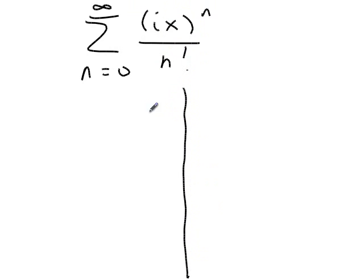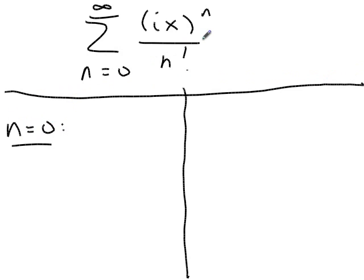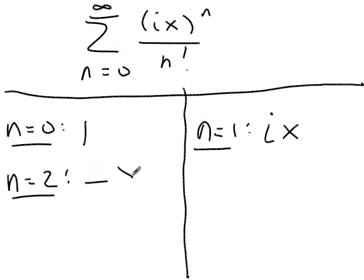The first few terms of the series n equals zero to infinity, ix to the n over n factorial, and I'm going to break it up into the evens and the odds, because I'm thinking ahead here. Let's look at n equals zero. Well, any number to the zero power, including zero in this convention, is one. Zero factorial is one. So the zeroth term is one. I substitute n equals one, I get ix to the first power over one factorial, and I'm going to write that as i times x. Let's look at n equals two. I've got i squared, which is negative one, x squared over two factorial. I'm going to write that as minus x squared over two.